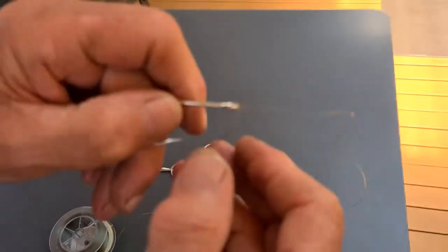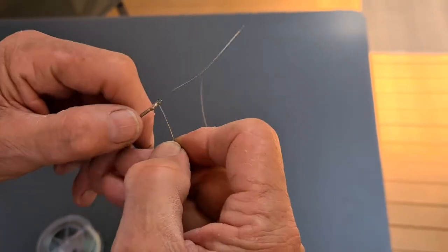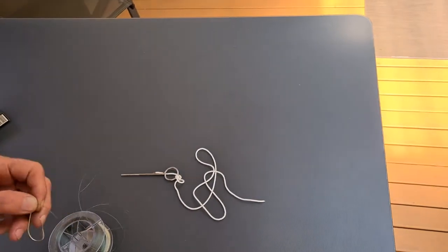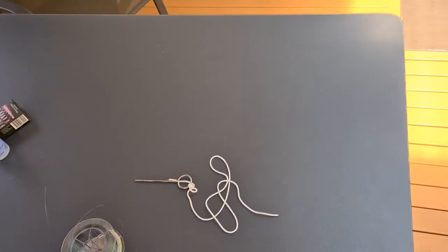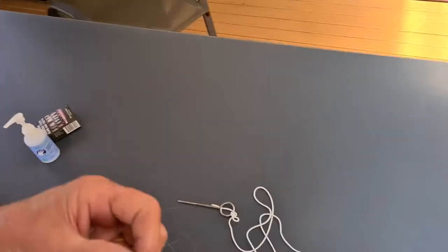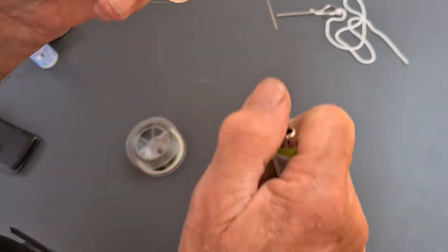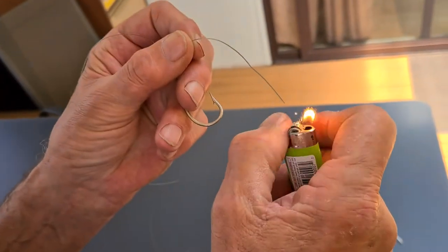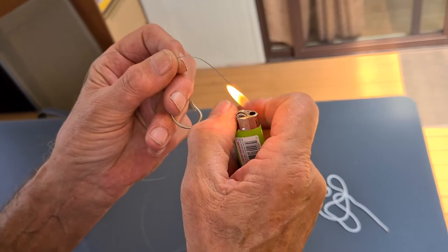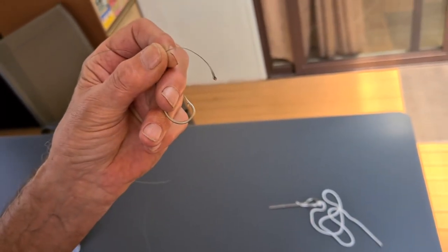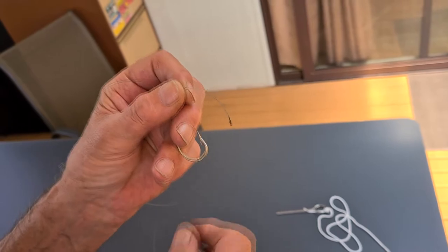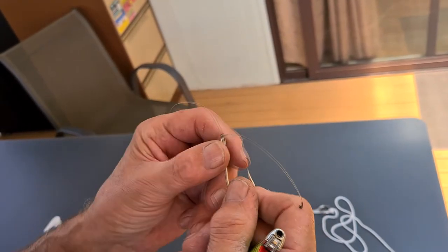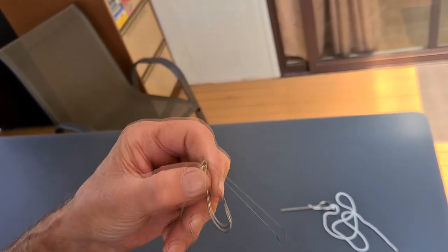And like I said, you normally cut it off about there. And then use a lighter. And just, if you watch carefully, you watch what happens. See, it forms a little bubble at the end. And that stops it from pulling through there if the line is very slippery.